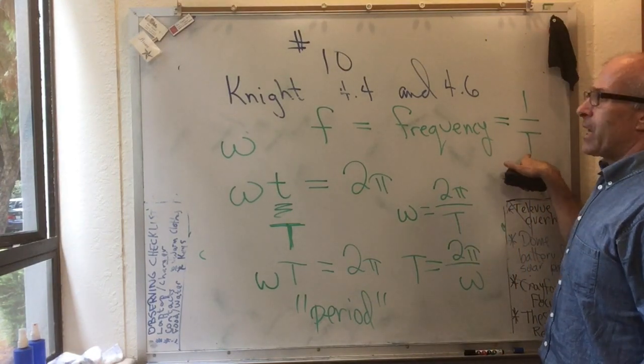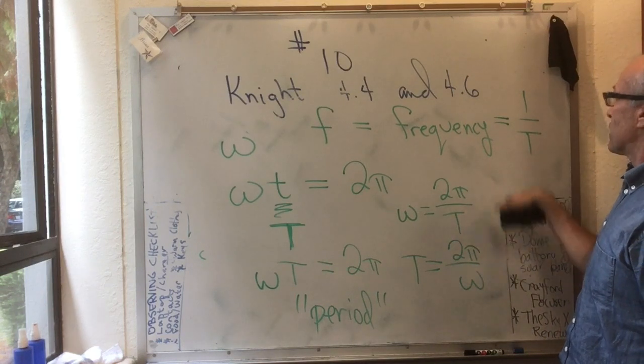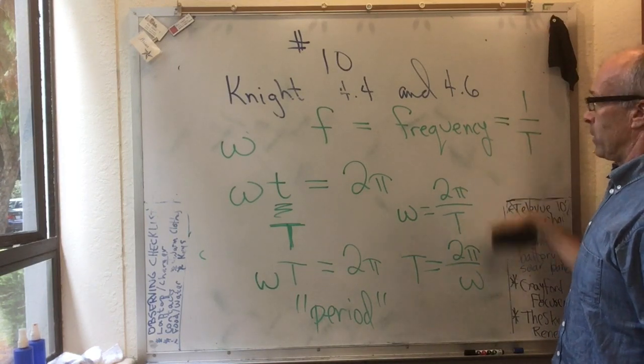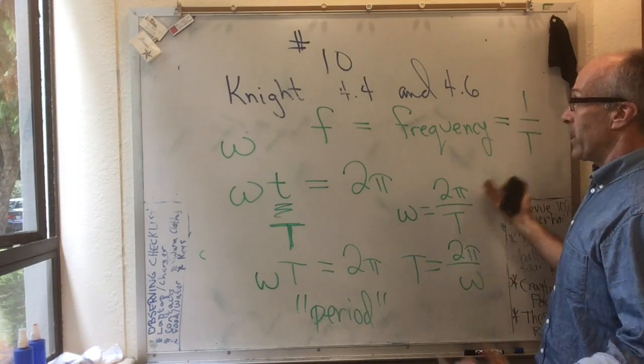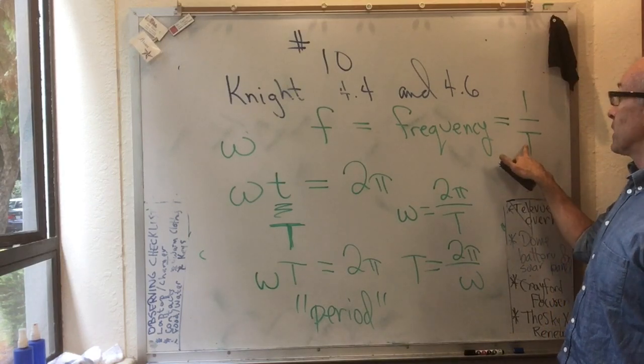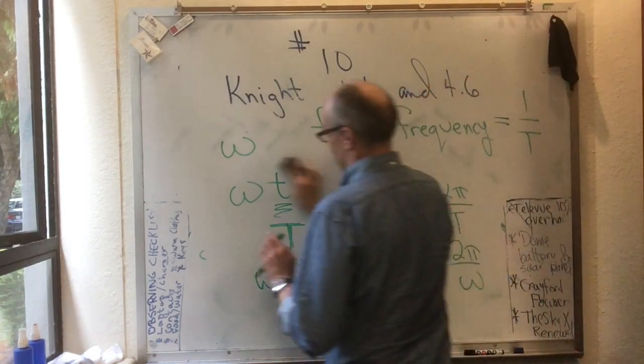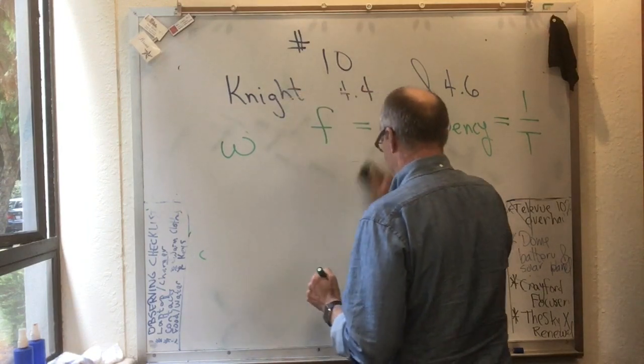So if it takes 3 seconds to go around once, then that's 1/3. If it takes 0.1 seconds to go around once, that's 10. And what are the units? I've got to be a little more precise here. Let's give an example.